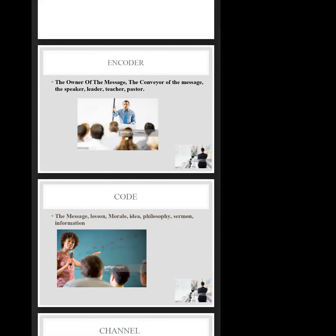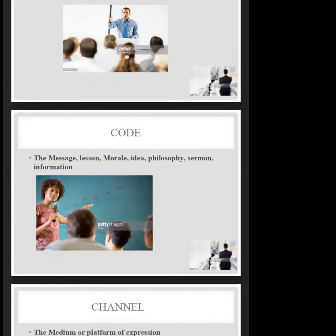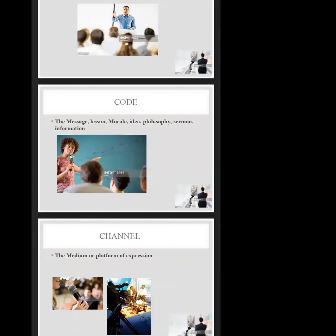That leads us to the second element that facilitates communication. The second thing is the code. As dynamic communicators, you want to find out how great your code is. What is your content? The code is the message, the lesson, the morale, the idea, the philosophy, the sermon, the information. Put in brackets: WHAT. So we don't just talk about WHO — we're also talking about WHAT. What are you talking about?